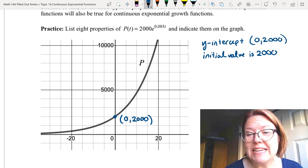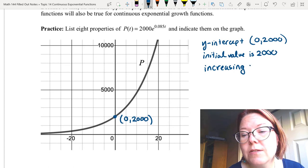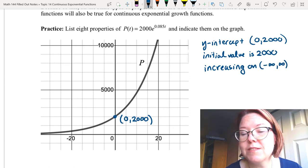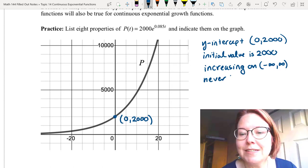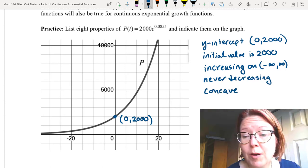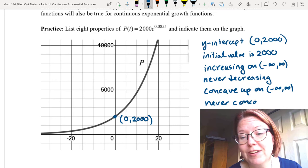The graph is definitely increasing and it's increasing for the whole graph. So it's increasing on the interval negative infinity to infinity with parentheses around both sides. It's never decreasing so there's another property. The graph is always concave up. So it's concave up on negative infinity to infinity. It's never concave down.